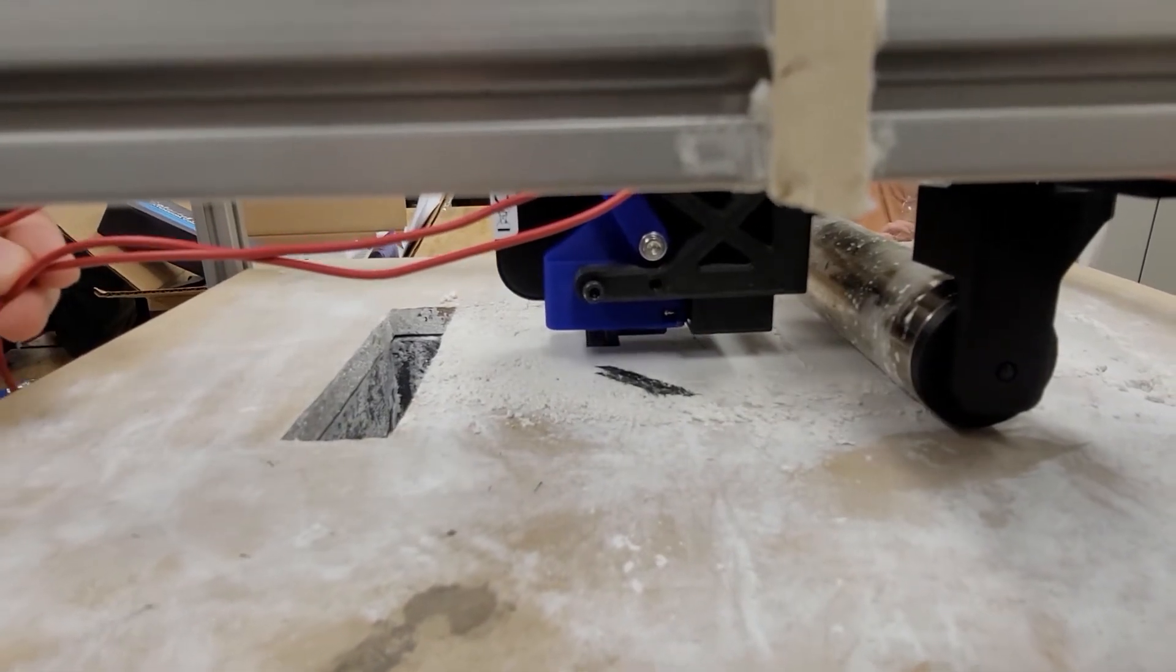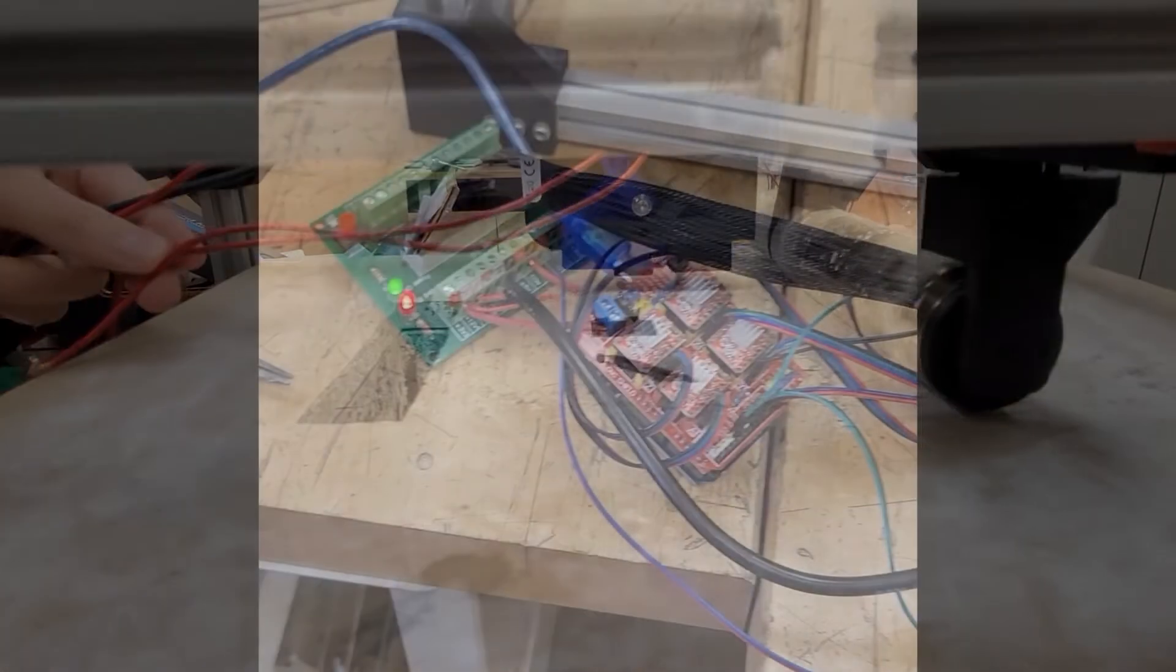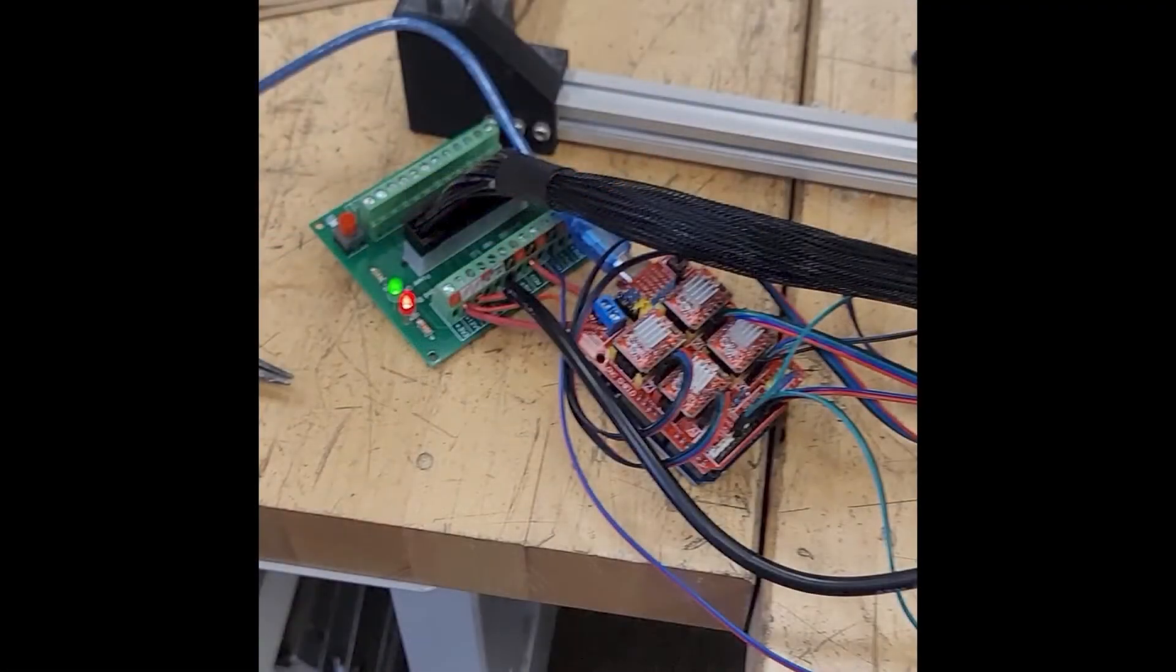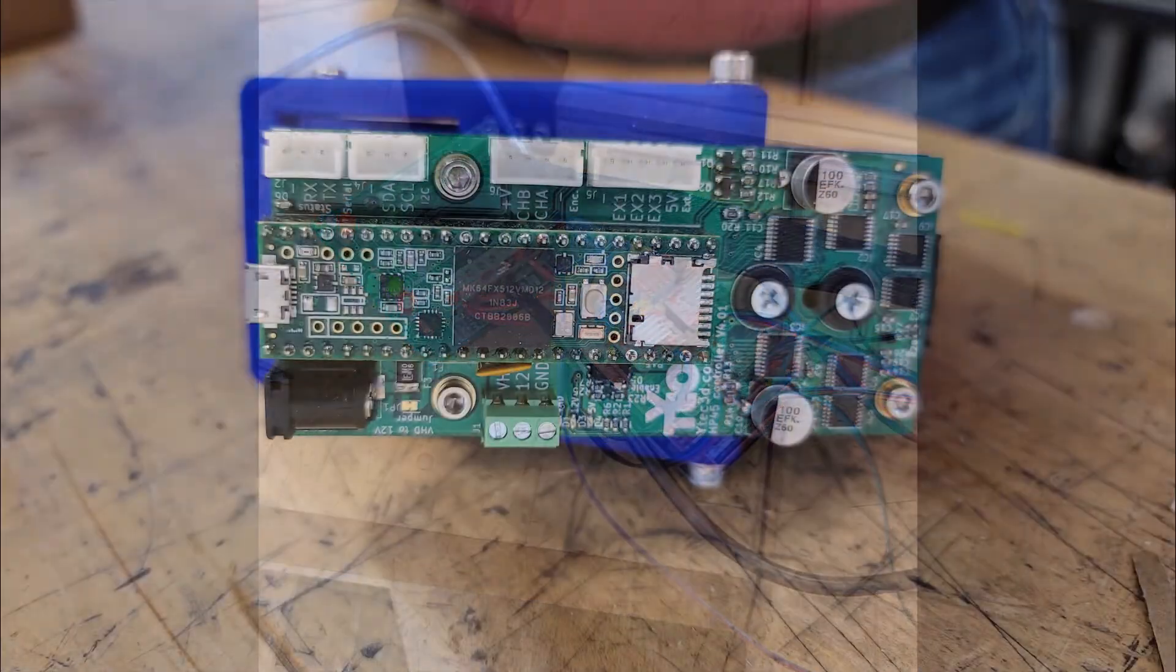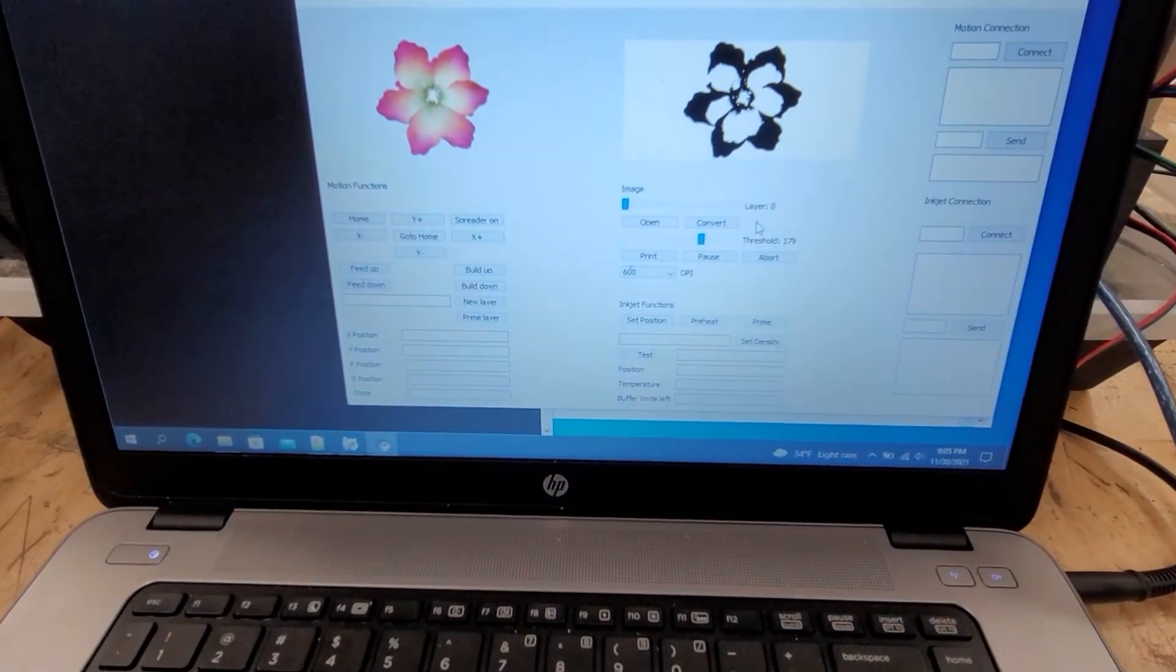Changing to the printhead also required changes in other parts of the printer such as movement and control. The control system was changed to an Arduino based system to control the movement and inkjet systems in series. This required custom controllers as well as a program designed specifically for our printer.